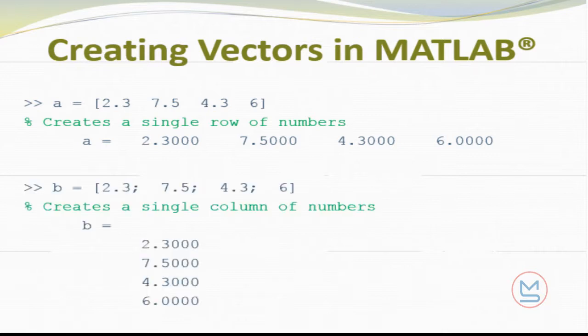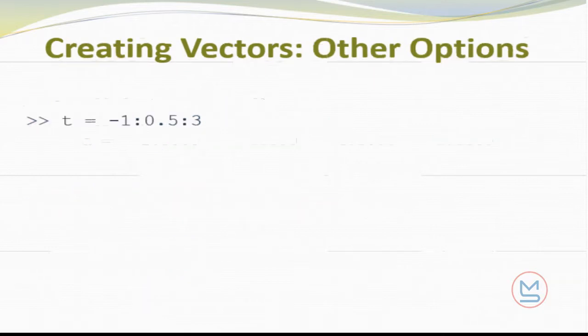Another example: again, start off with some sort of a variable name, B, square brackets, type a number, semicolon, next number, semicolon, next number, semicolon, and that gives me a column of numbers. This works fine if you only have a few values that you want to enter into your vector, but you can imagine if you had 200 values that you wanted to enter, it would get old really fast.